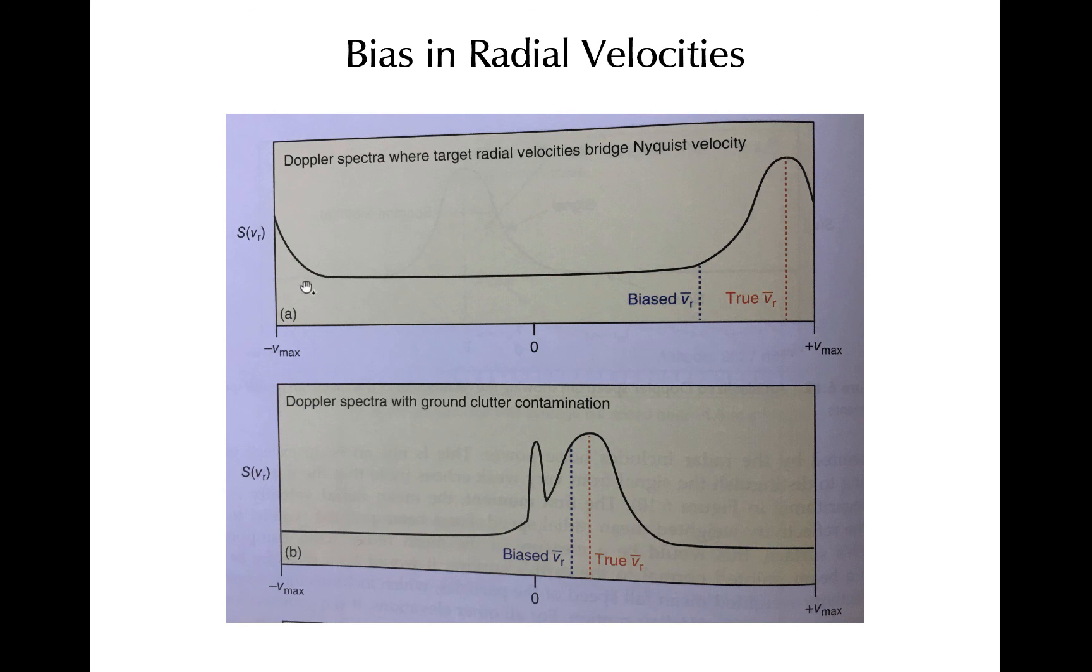And that's the problem with the velocity folding, if it's not unfolded. Thus, while the true mean radial velocity of this distribution is near the Nyquist interval, the reported radial velocity is skewed too low because it's containing all these negative radial velocities that the radar is interpreting out of these actually strong positive velocities.